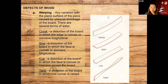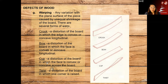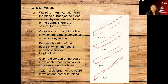The first type is the crook — distortion of the board on the edge, either convex or concave. We have the bow — distortion of the board on the face. Crook is on the edge, bow is on the face. The cup is when the board curves across its width, like it's cupping. And then the twist is a distortion — the board is warped diagonally.